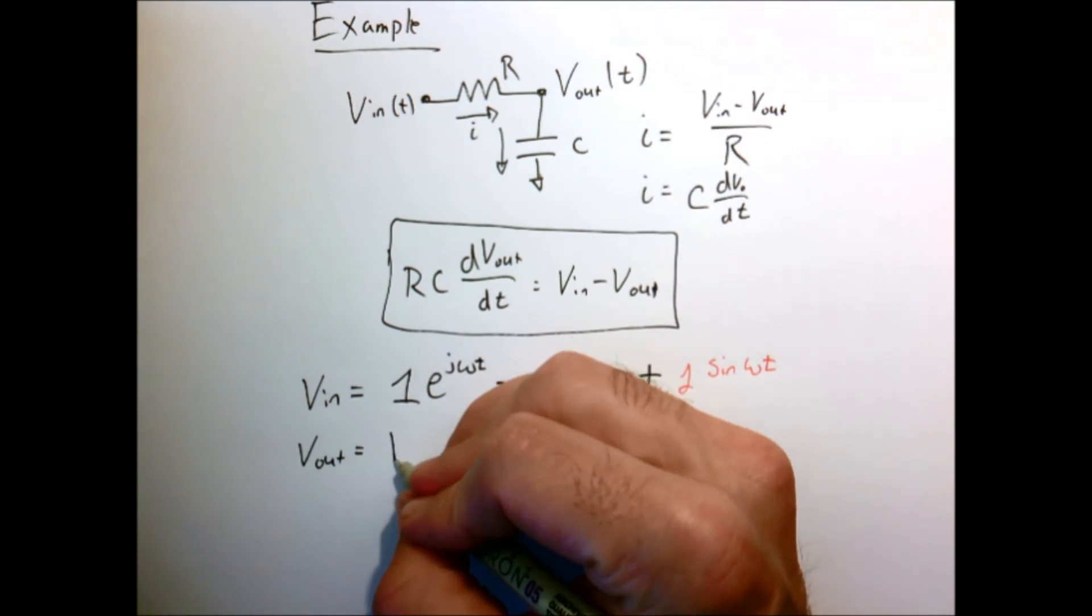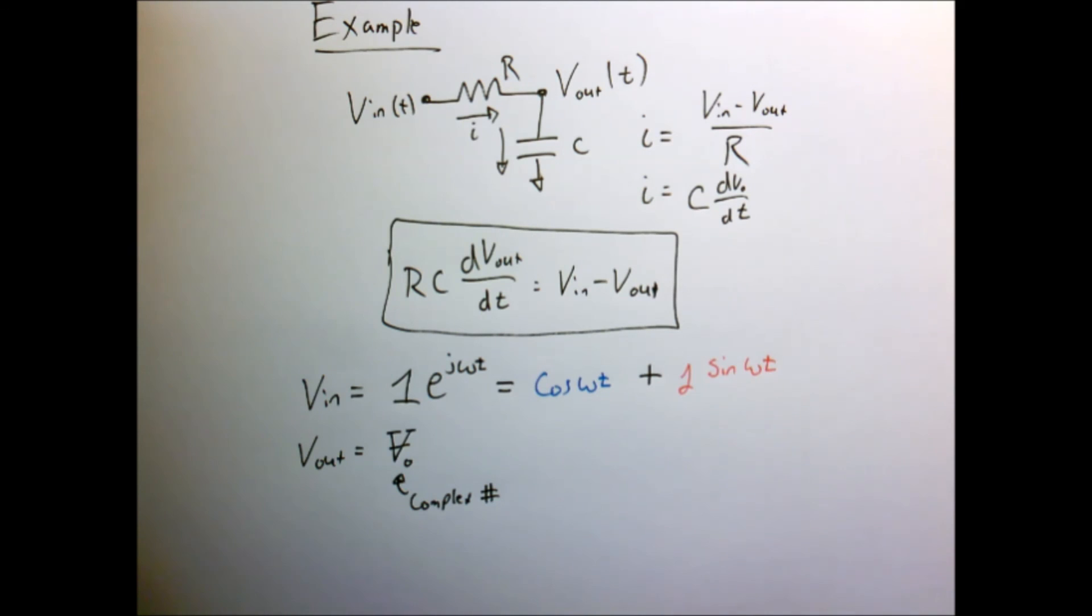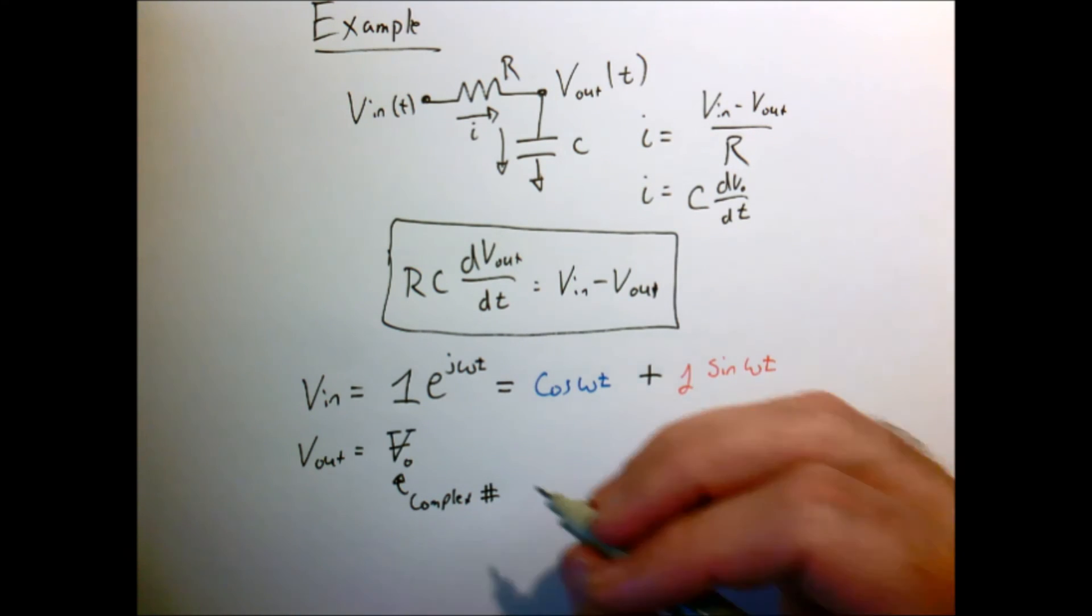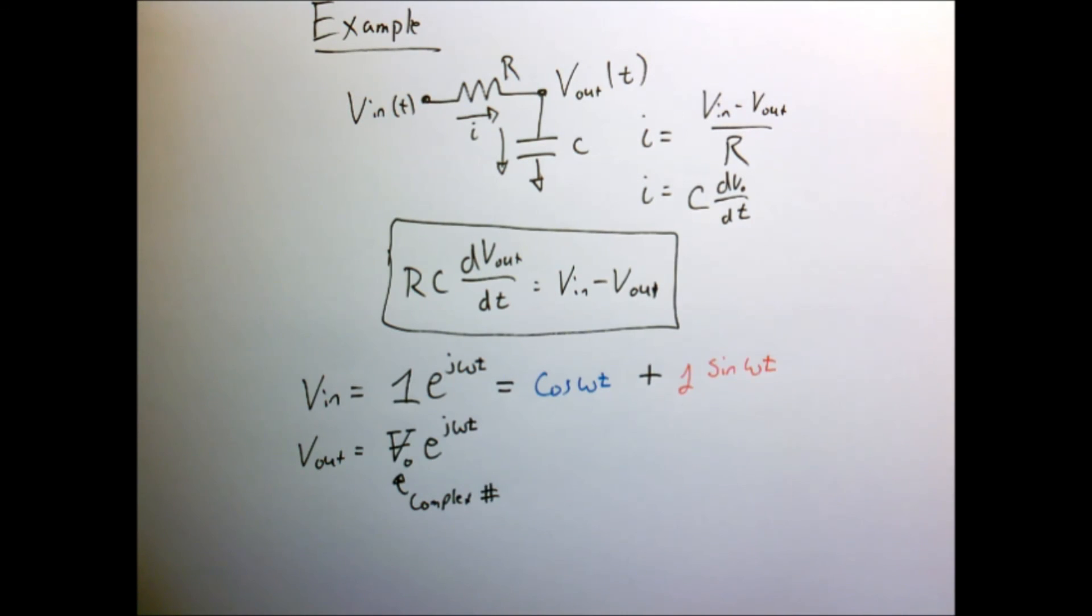And let's assume that V out is given by some number, capital V, V naught, which is my complex number, e to the j omega T. So we saw that this number can represent both the magnitude and the phase of my signal.